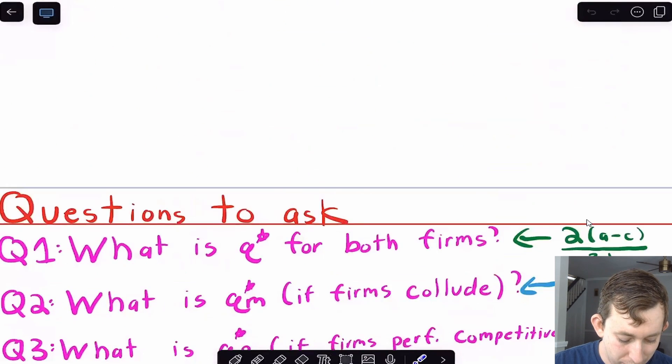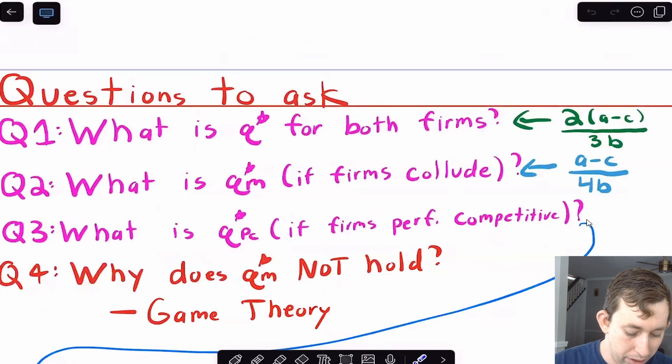Now one thing that's useful in terms of trying to check yourself in real time, if this is q star, and I'm trying to be a monopoly, we each should be making less. So that's a useful check right there.